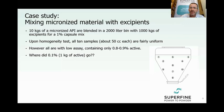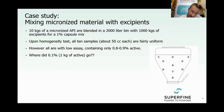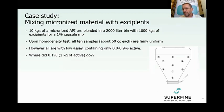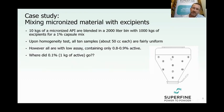The case is real. There is a formulator — a pharmaceutical company — that is using micronized material. They take 10 kilograms of API and blend it in a 2000-liter bin with 1000 kilograms of excipients. So we have one percent API in the mix. The other components are cellulose and lactose — they're well-flowing — and the dose is not that high.